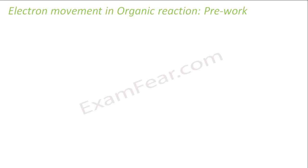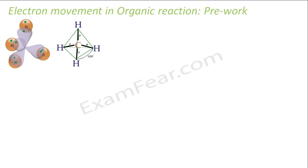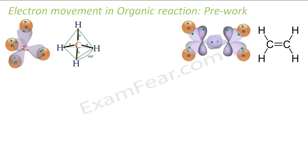Before that, let's do some pre-work and revise some concepts. For example, the methane structure has a carbon with four sp3 hybrid orbitals, and these are all linked to hydrogens.